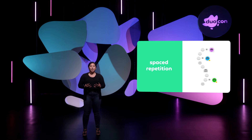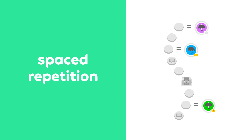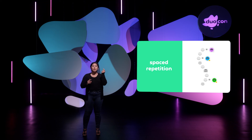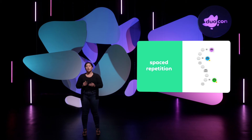For example, we'll first introduce a concept to you at the top of the path. Then, maybe a level or two later, we'll review it at a slightly higher difficulty. Then, as you improve your grasp on the concept, we'll increase the difficulty even more, as well as the space between the review. Our learning experts and our data help us tune the optimal pattern for language learning.